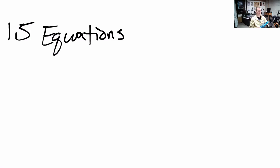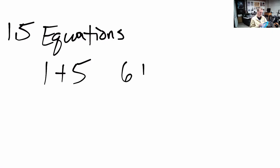We've seen lots of expressions before, and we've even seen equations before. An equation is just one expression, say 1 plus 5, together with another expression, say 6 plus 3 minus 3, and when we throw this symbol in between them, we can mean one of two things.